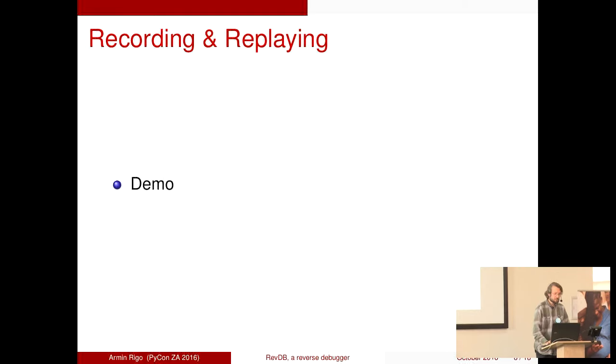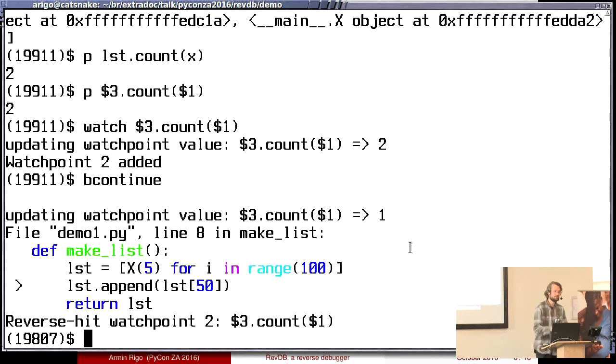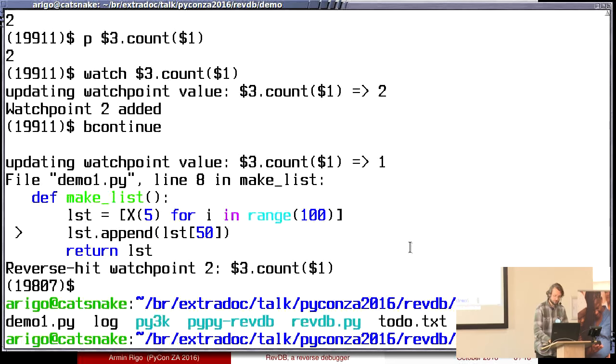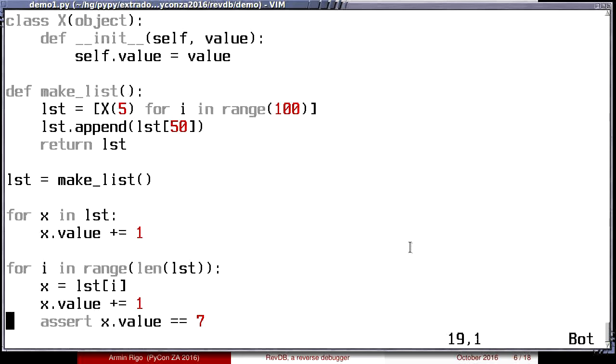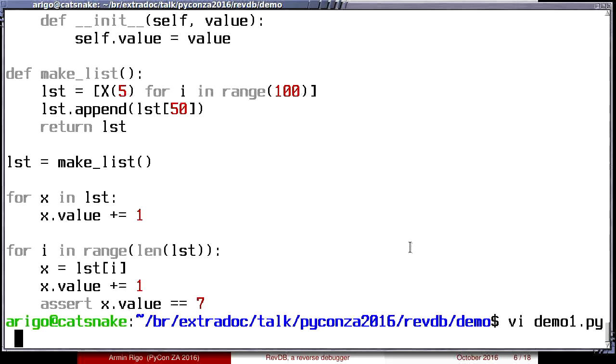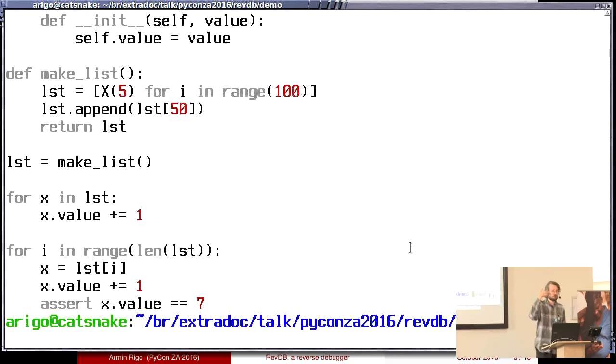A bit of context. What you need to do to do all this, I mean, here I showed the end of the demo, the place where you are already at the assert. However, what you really need is, well, so I start with a normal Python program. It can be big. And you need two things. First, you need to record an execution. And then when you see that you have managed to record an execution which shows a strange bug, then you fire the debugger on the log of the recorded execution.